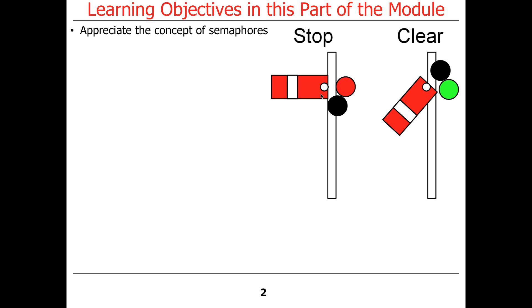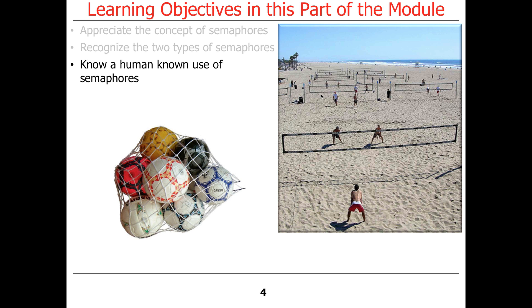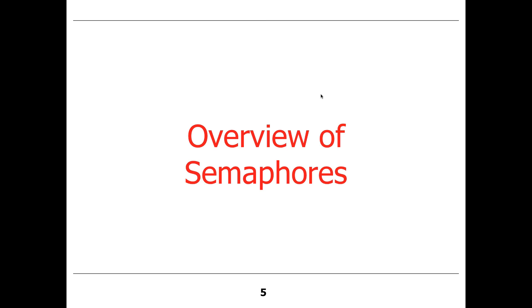What we're going to do here is first talk about what is a semaphore and historically what does it mean. We're going to talk about the two types of semaphores, which are counting semaphores and binary semaphores. I've already given you a human-known use of semaphores, so we can go through this very quickly.